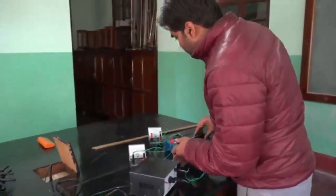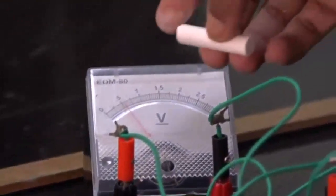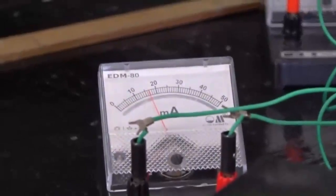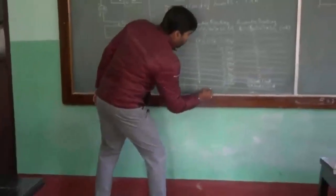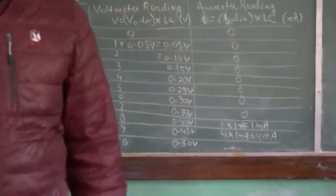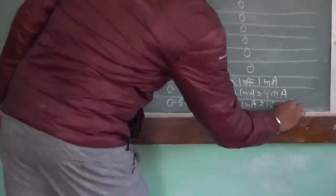We will go for the next, the 10th division. You can see the current is increasing very rapidly. For the 10th division, that means for 0.50 volts, we are getting 15 divisions, that is 15 into 1 milliampere, which is 15 milliamperes of current.